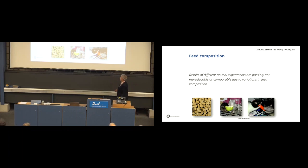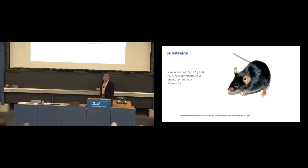So, feed is very important in the environment we keep the animals. The other one, and we have heard that before, is substrains. We also have substrains in animals. And the nicest example is the black six mice.